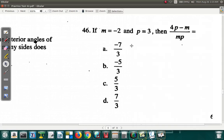Question 46 of practice test 2. If m is equal to negative 2 and p is equal to 3, then 4p minus m over mp equals. Let's see. 4 times p.